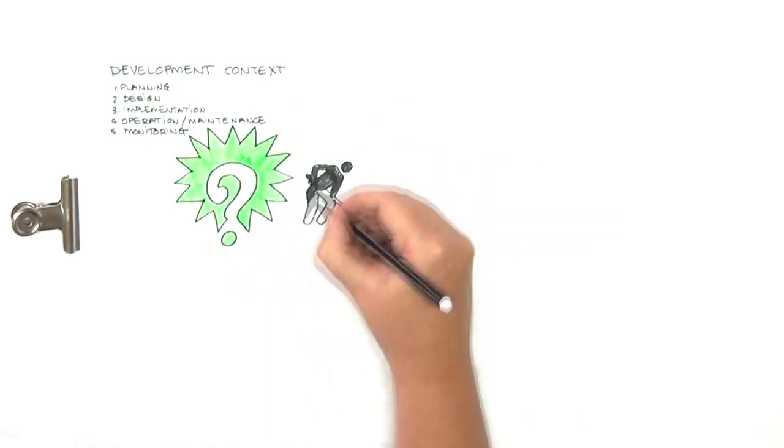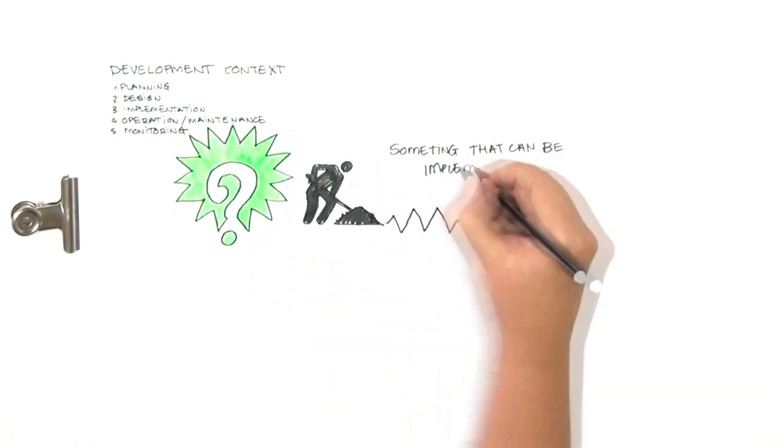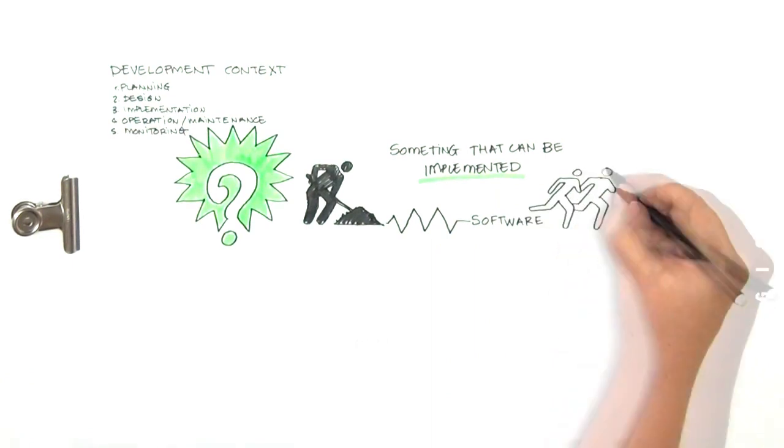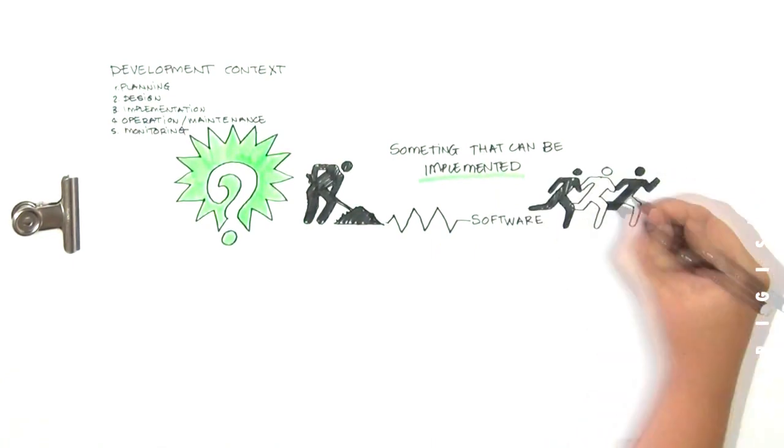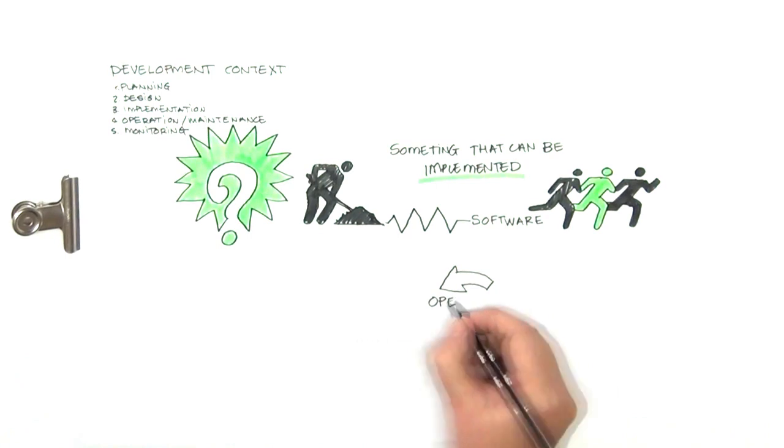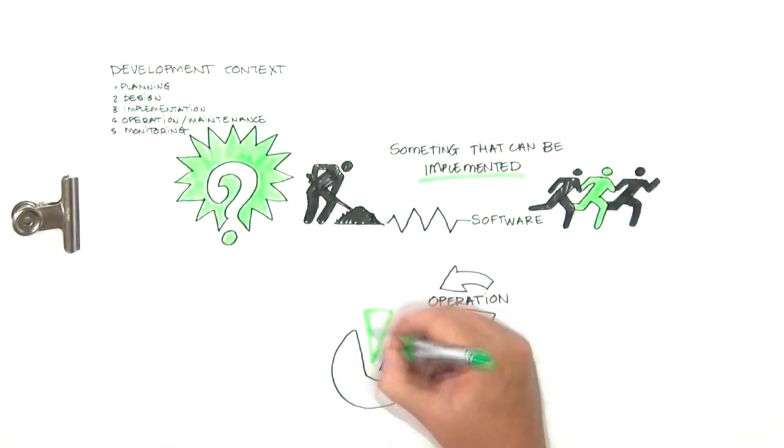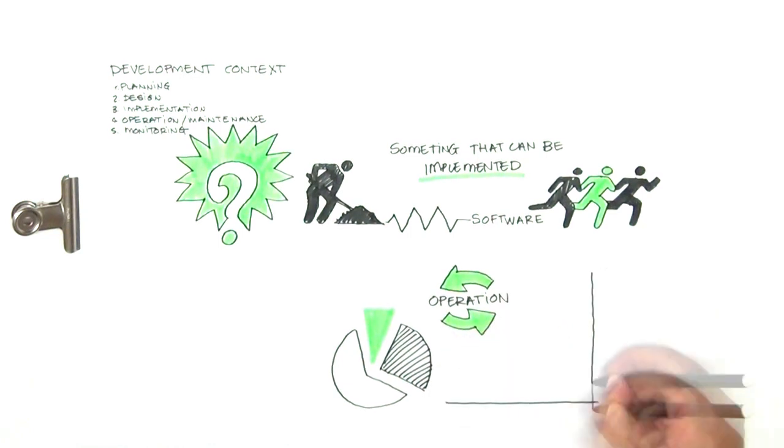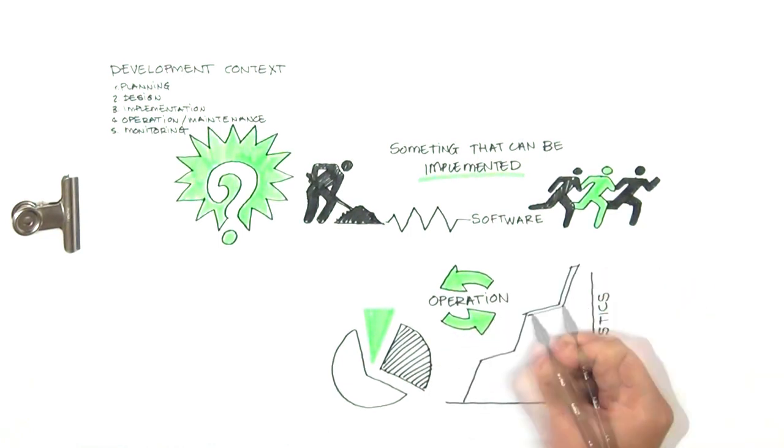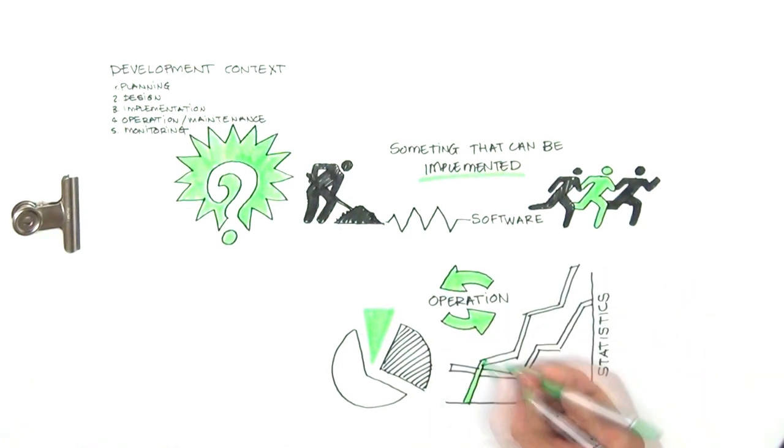Creating solutions that can be implemented, be it a construction project or writing a software program. In both instances, even if we get the how right, we need to operate the plan that was implemented and monitor that it is done correctly. We need to report on the implemented project and gather the relevant statistics to monitor and improve.